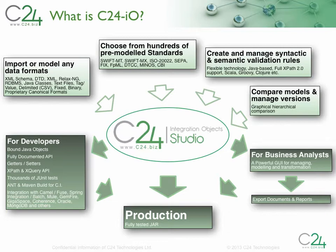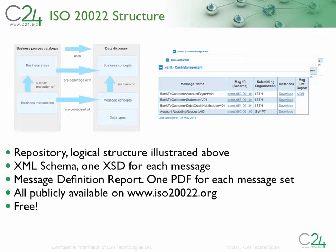You'll notice that 20022 is listed in the top middle box here. ISO 20022 messages have been available as licensable units of C24 for many years. This immediately begs the question: what's the difference between the 20022 repository, which is free, and the 20022 messages, which require a paid license? To answer this, let's remind ourselves of the overall structure of the 20022 standard. The repository comprises a business process catalog and a data dictionary. The message definitions are available as XML schema, and messages that can be combined to support a specific business process are grouped into message sets. Each message set has an overarching set of documentation called the message definition report, or MDR. Currently, there are 25 message sets in the 20022 repository, and everything you see here is freely available from the 20022 website.